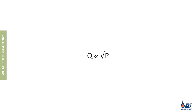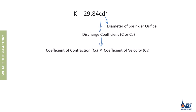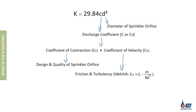The discharge flow rate of a sprinkler is proportional to the square root of its operating pressure. The proportionality constant that converts this relationship into a usable equation is called the K factor. The K factor can be obtained using the formula: K = 29.84 × C × d², where d is the sprinkler orifice diameter in inches and C is the discharge coefficient — the product of the coefficient of contraction and the coefficient of velocity. The coefficient of contraction varies with the design and manufacturing quality of the sprinkler orifice.